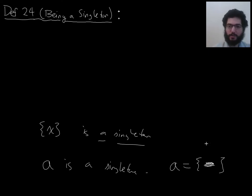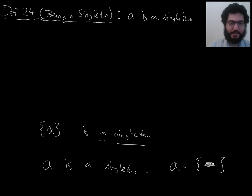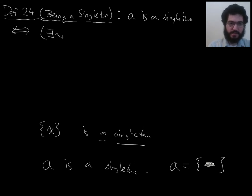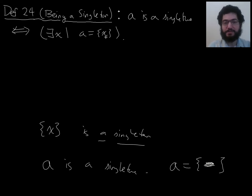So, we can make this a formal definition. We'll say A is a singleton — I'm defining the predicate 'is a singleton' — if and only if there exists some X such that A is singleton X. You can think of this existential quantifier as saying A can be written as singleton something.